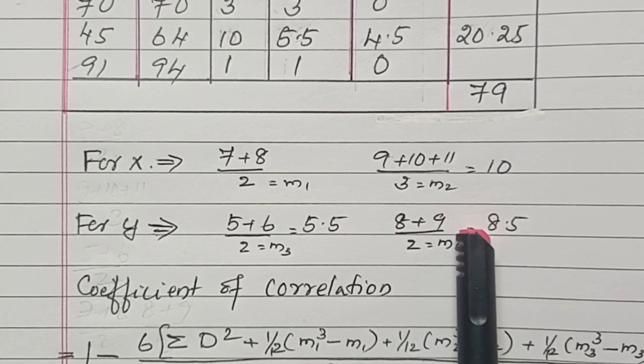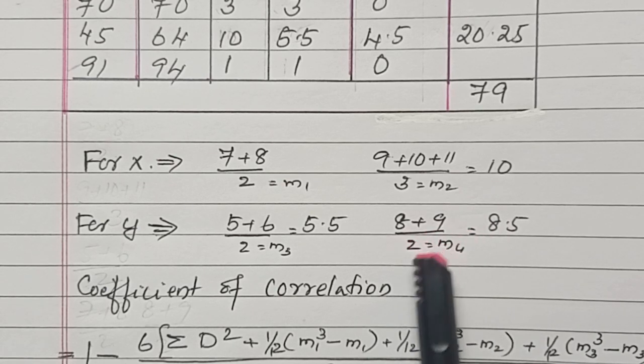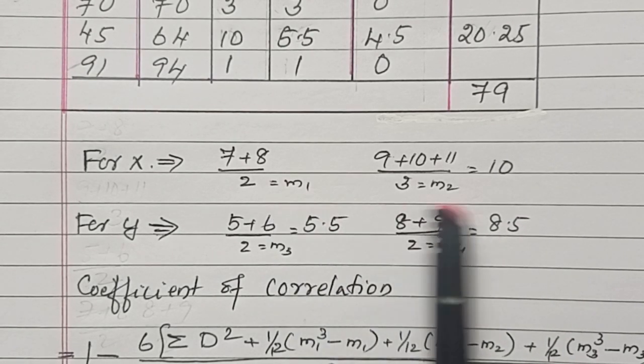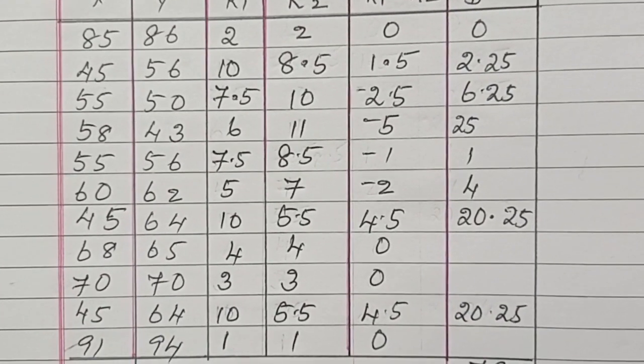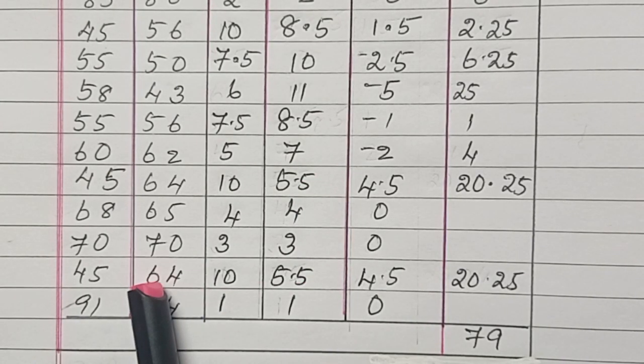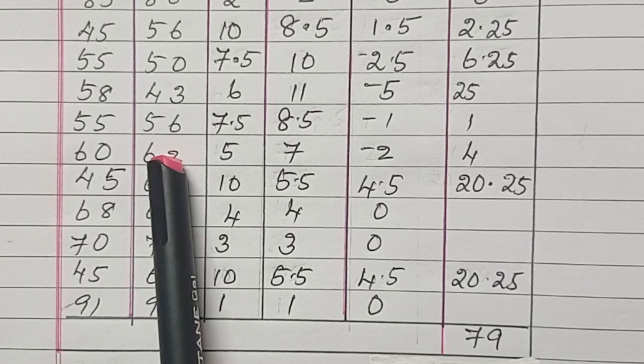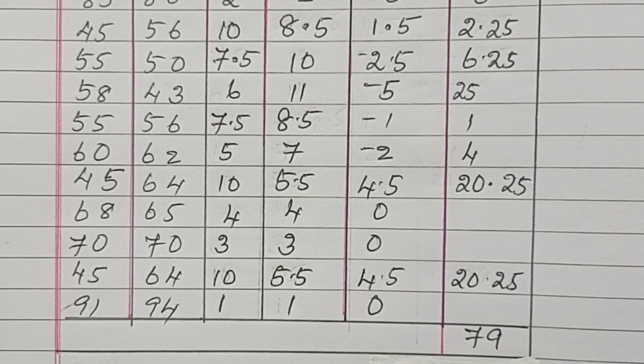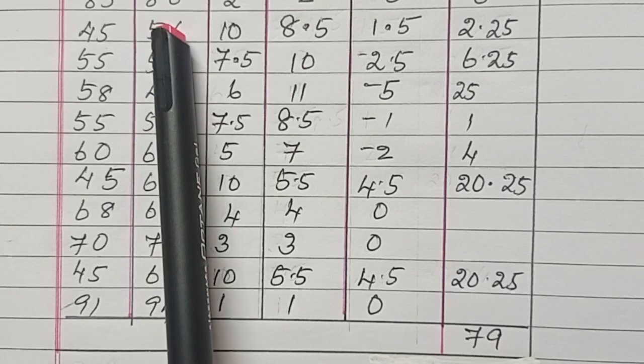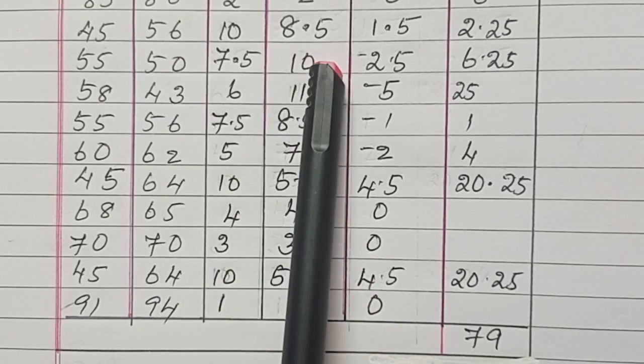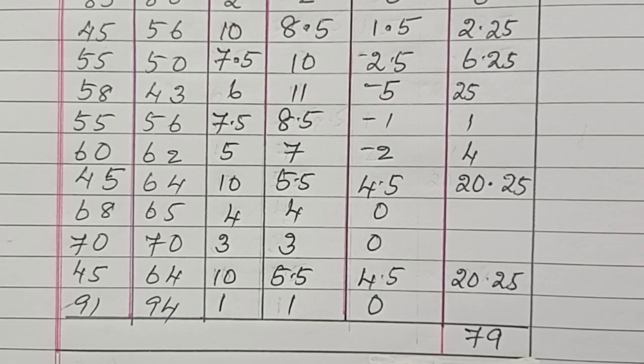For 8th and 9th rank repeating for the number 56, we divide by 2. Answer is 8.5. We're taking this as M1, M2, M3, M4. 5th and 6th rank is repeating for 64. Then 7th rank is here. 8th and 9th rank is repeating for 56. Therefore 8 plus 9 divided by 2 is 8.5. Then 10th rank is for 50 and 11th rank is for 43.